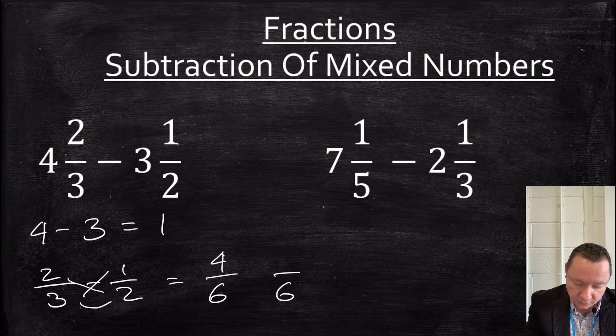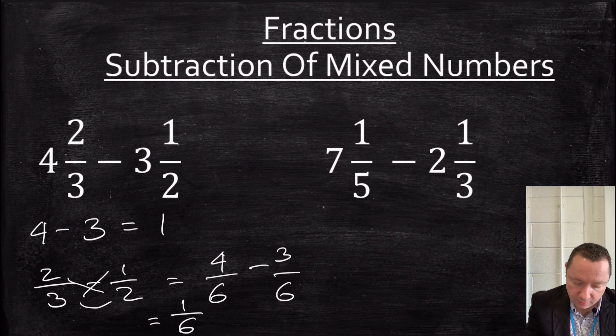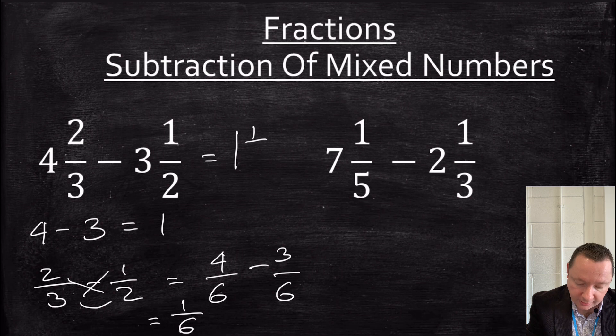2 times 2 is 4. 1 times 3 is 3. 4 minus 3 is 1. So I get a sixth. So the final answer, just putting it together, is 1 and a sixth.